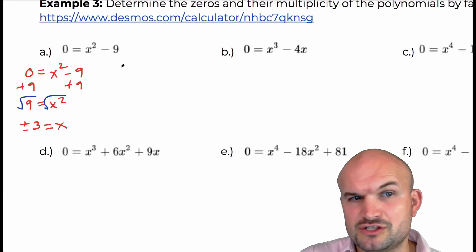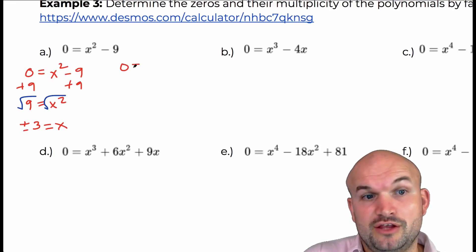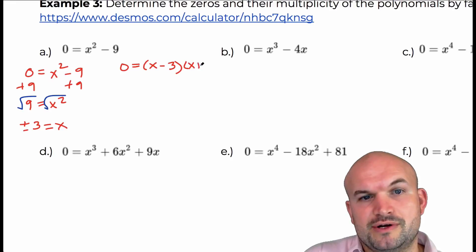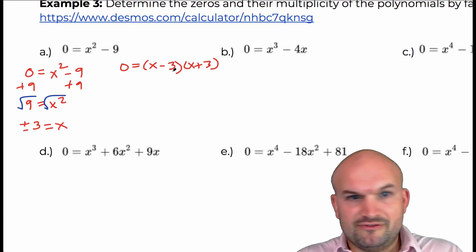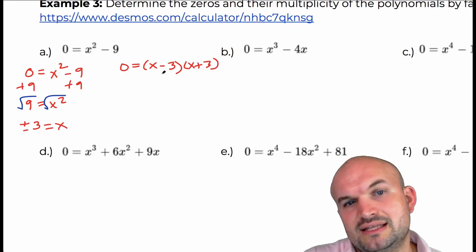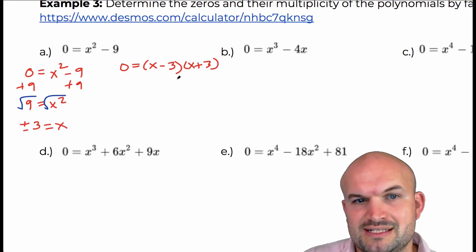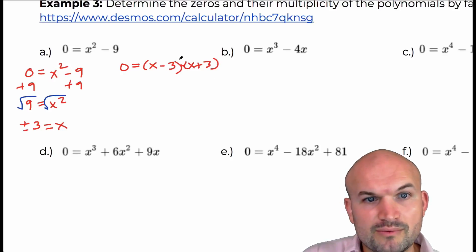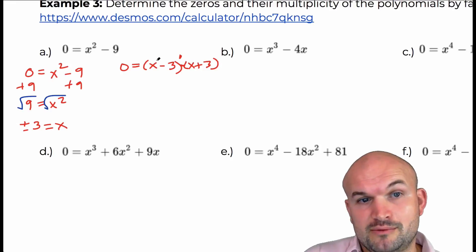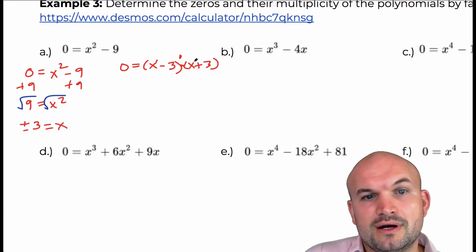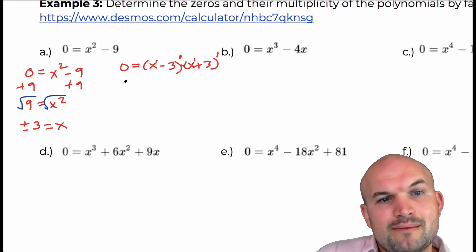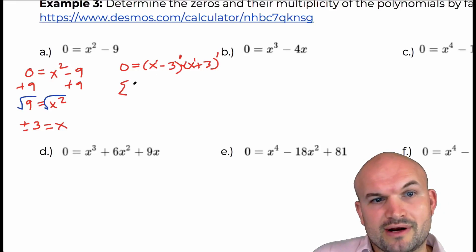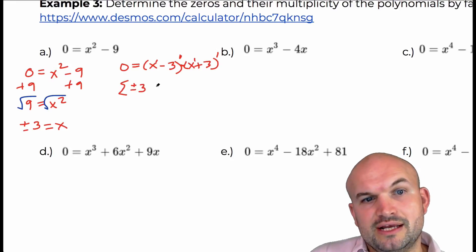We notice this is a difference of two squares, so we can factor it as (x minus 3)(x plus 3). You can check by multiplying back — the middle terms add to zero, leaving x² minus 9. Now written as a linear factorization, we can see both factors are linear and each has a power of one. So the zeros are plus or minus three, and they both have a multiplicity of one.